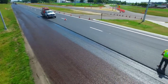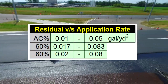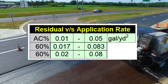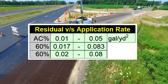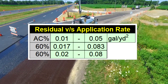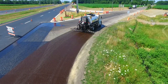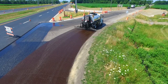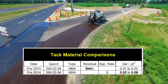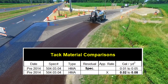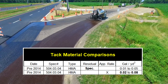Converting the other residual rate yields an application rate between 0.02 and 0.08 gallons per square yard. The rate being applied by this distributor is 0.05 gallons per square yard and would have met the specifications.